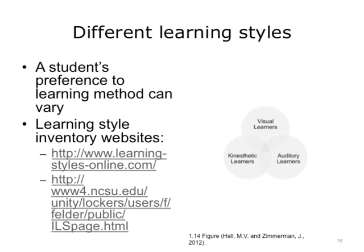Adult learners also have different learning styles. Learning style is a learner's preference for a method of learning — these aren't exclusive and are really considered a preference. There are visual learners, auditory learners, and kinesthetic learners. Visual learners learn through seeing; they need to see the teacher's body language and facial expressions to fully understand content. They tend to prefer sitting in the front of the classroom, may think in pictures, and learn best from visual displays including diagrams, illustrated textbooks, videos, and handouts. During a lecture, visual learners often prefer to take detailed notes to absorb information.